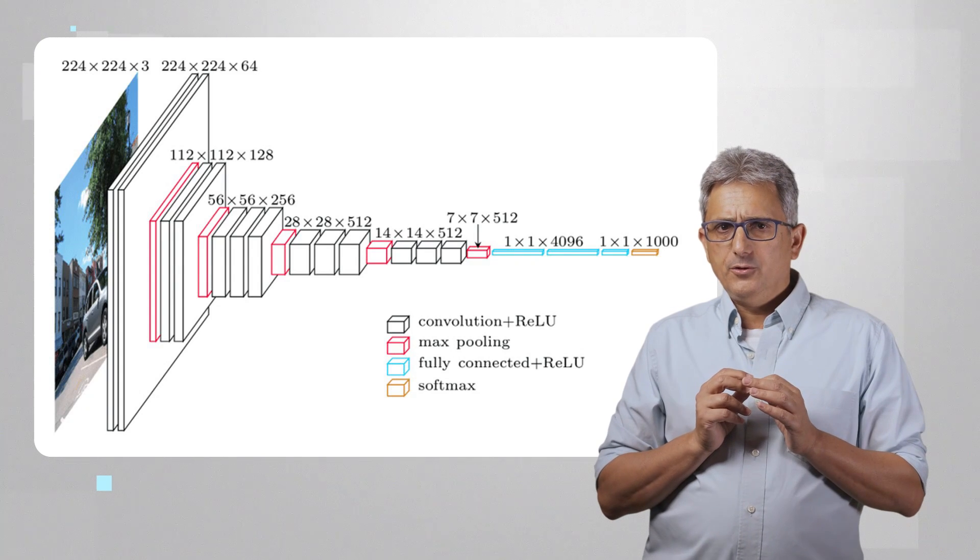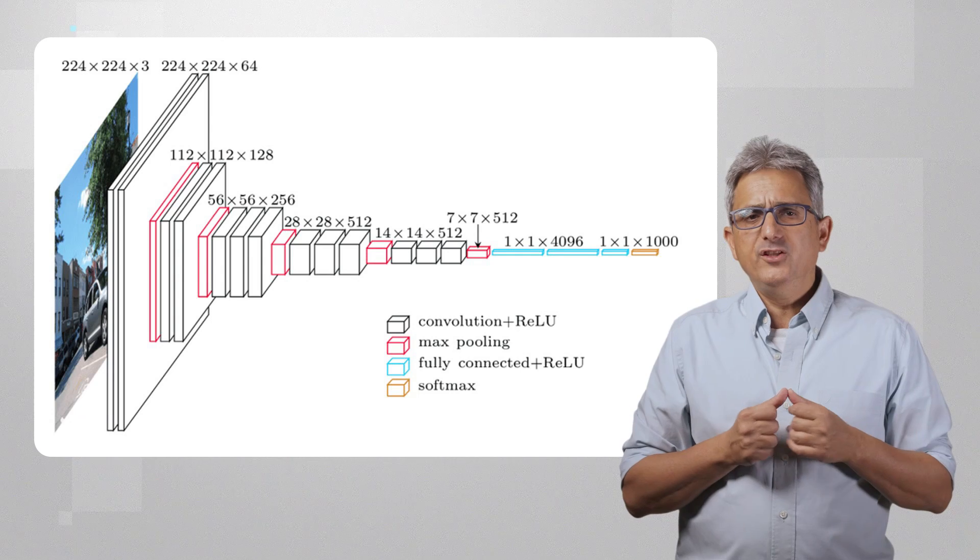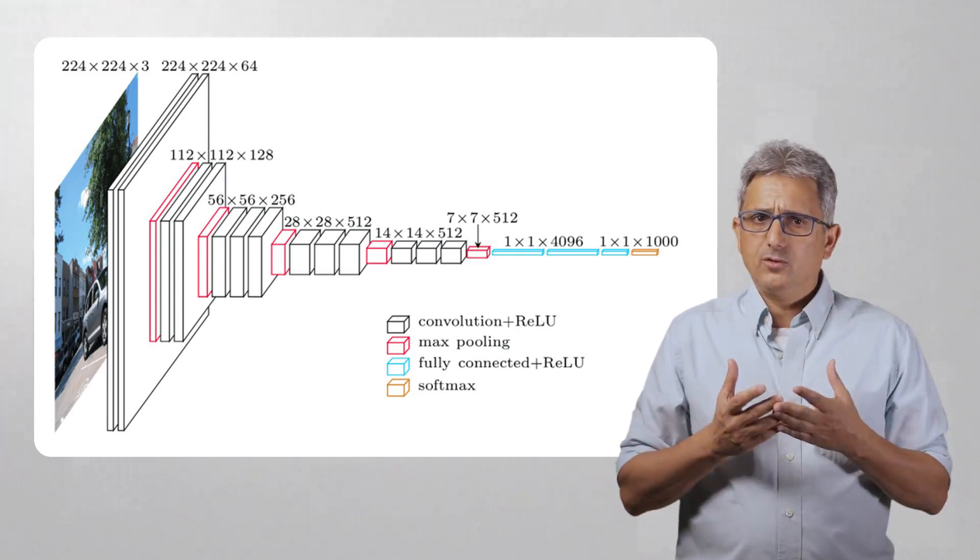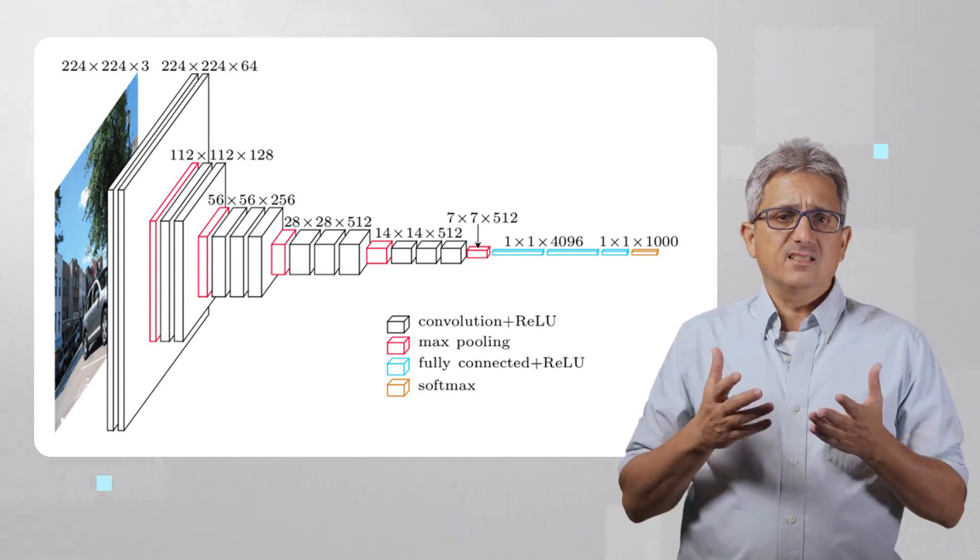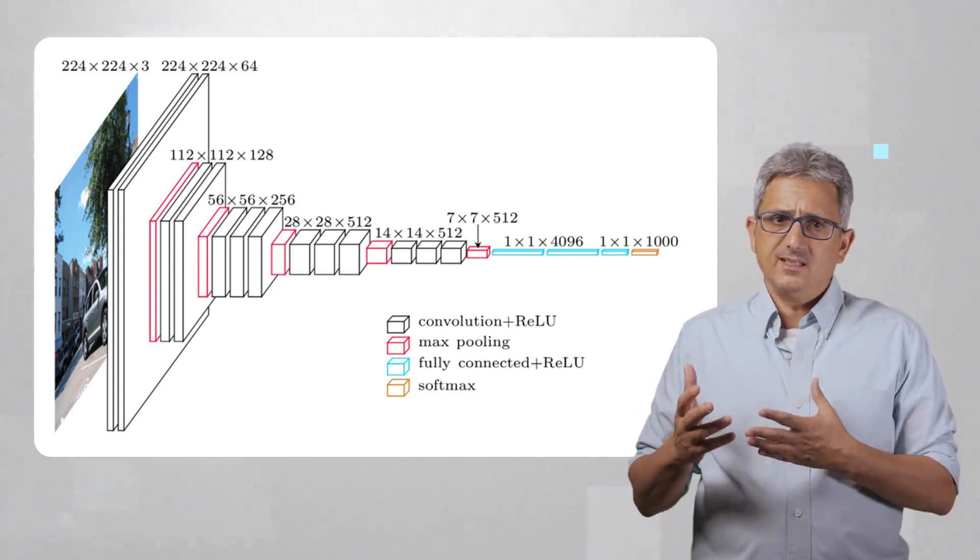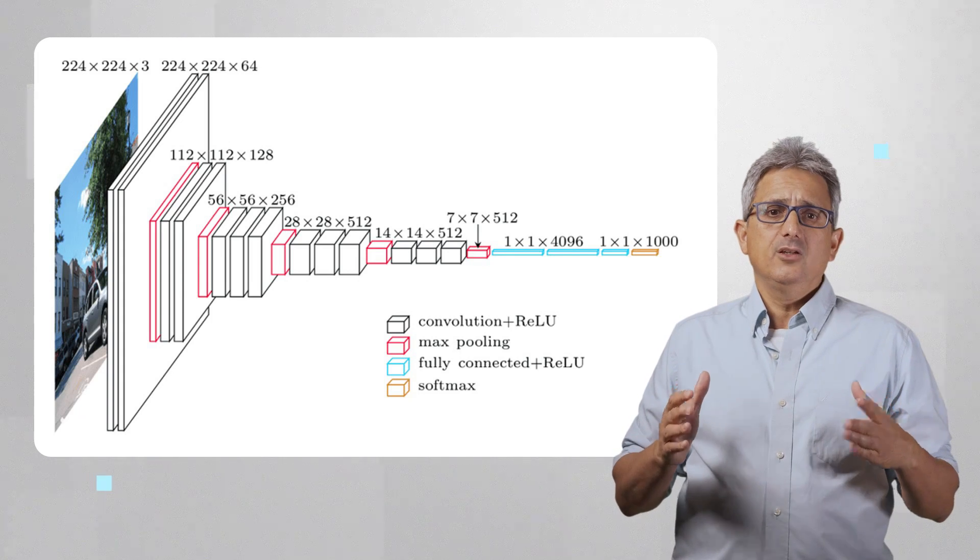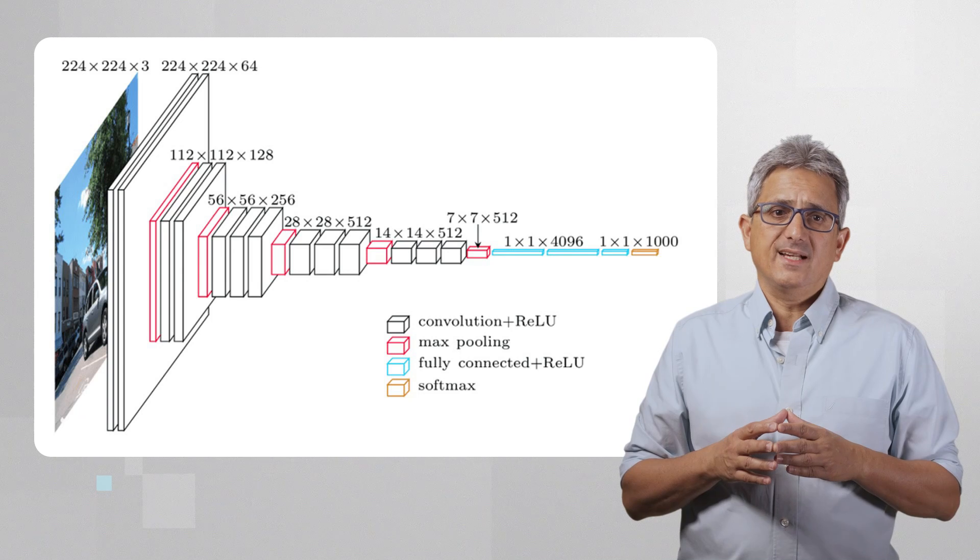The deep learning based model we're using in this case is a variation of VGG16. It is a convolutional neural network. Most of the first layers are convolutions. It has 16 layers, and it was originally trained using a dataset called ImageNet that has more than 14 million training images across 1000 object classes.